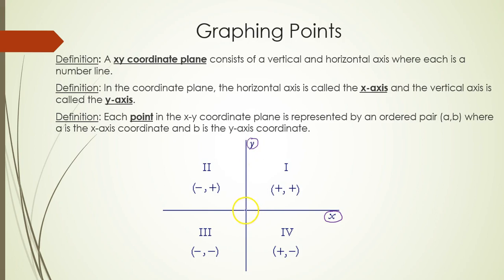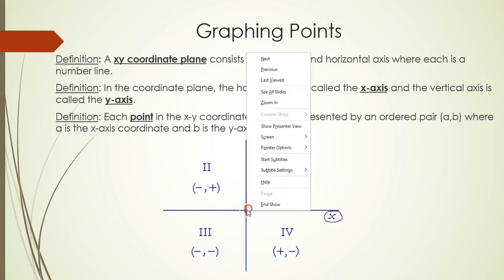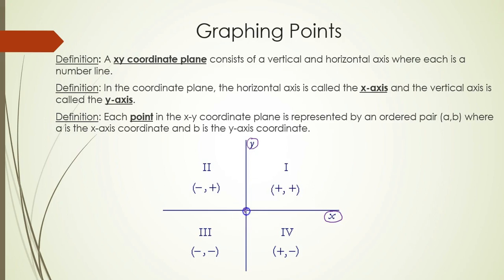These axes intersect at a point called the origin. The point of intersection is called the origin and it's represented by the ordered pair (0,0).